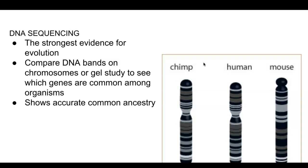When you do DNA sequencing, you're going to compare the DNA bands on chromosomes, or use gel electrophoresis and study those gels to see which genes are common among organisms. So it shows an accurate picture of common ancestry. If you look at a chromosome, all those different color bands represent the locus of genes, and the gene loci are where those genes are found on those particular chromosomes.